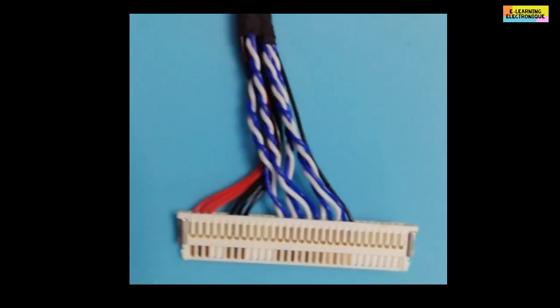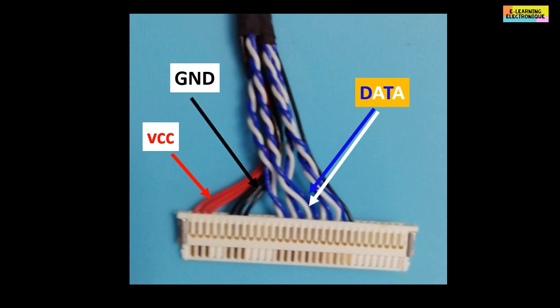On this figure, we see an example of LVDS cable. We notice several colors and some are twisted by pairs. The blue and white cables which are twisted by pair correspond to the various LVDS lines carrying the data. On the other hand, the red wires correspond to the VCC power supply and the black wires are for the connection to the ground.